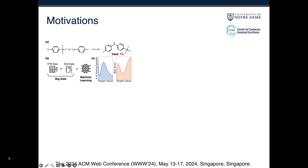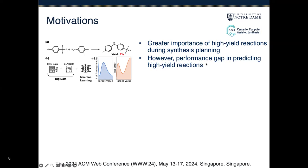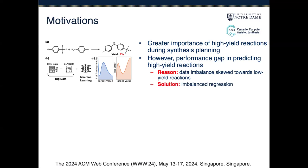Figure C shows an example of imbalanced regression. In the picture, areas with more training data are generally better learned than sparser regions. The first motivation is that there is greater importance of high-yield reactions during synthesis planning for chemists. However, there is a significant performance gap in predicting high-yield reactions, despite their greater importance. We show that the reason for that is the data imbalance skewed towards low-yield reactions. Our solution is to leverage techniques from imbalanced regression.